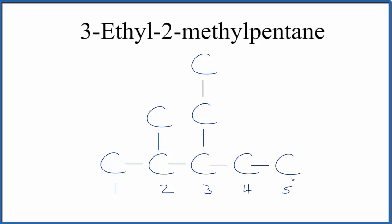Again, we have our longest chain, five carbons. That's our pentane, all single bonds. On the second carbon right here, we put this methyl group, and on the third carbon right here, we put the ethyl group. 3-ethyl-2-methylpentane.